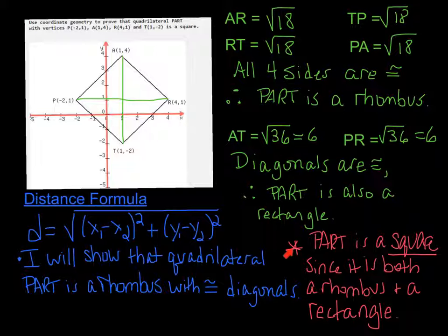In our final conclusion, PART is a square since it is both a rhombus and a rectangle.